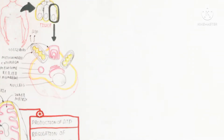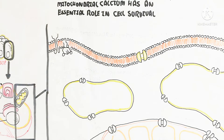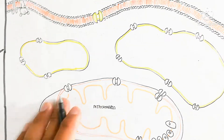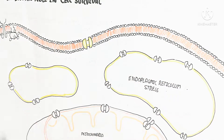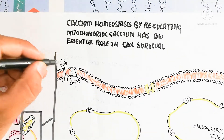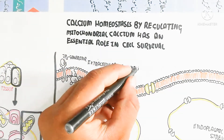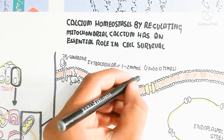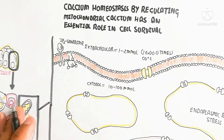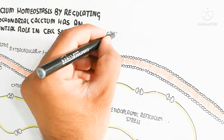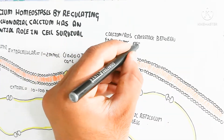Here you can see the plasma membrane. The IP3 receptor, when bound, will activate the PI3K pathway. The extracellular calcium concentration is 1 to 2 millimolar, which is 10,000 times more compared to the inner cytosol, which contains 10 to 100 nanomolar. Calcium is present both extracellularly and intracellularly, as well as in the mitochondria.